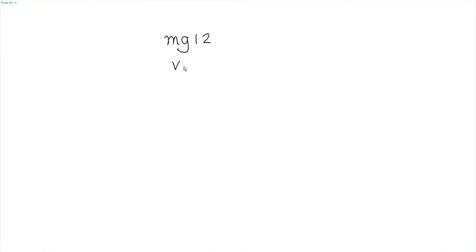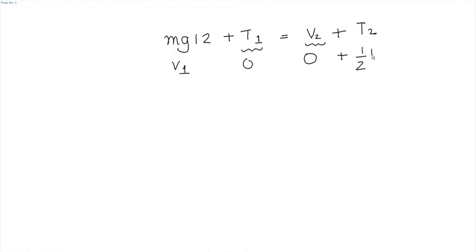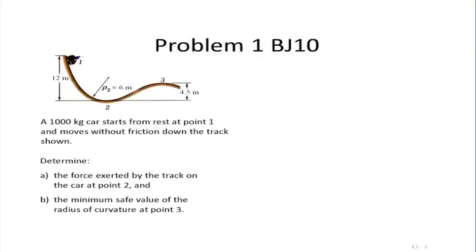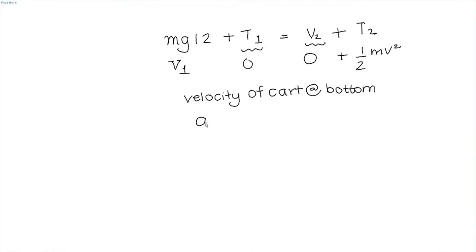m*g into 12, with T1 equal to 0, should equal V2 plus T2. At the bottom, using that bottom as the datum, V2 is 0 and T2 is half m*v squared. From that we can find the velocity of the cart at the bottom, and once we know that, the radius of curvature of the track is given as 6 meters — giving us the normal acceleration.